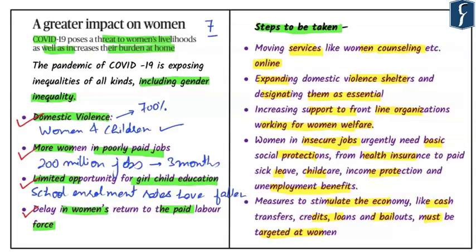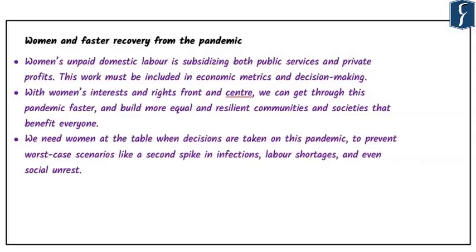The PM Garib Kalyan Yojana implemented by the Government of India has focused on ensuring benefits are directly transferred to women's accounts. For faster recovery from the pandemic, the author suggests that women's unpaid domestic labor is subsidizing both public services and private profits, and hence their contribution should be included in economic metrics and decision making. Women's contribution to GDP is basically underrated.